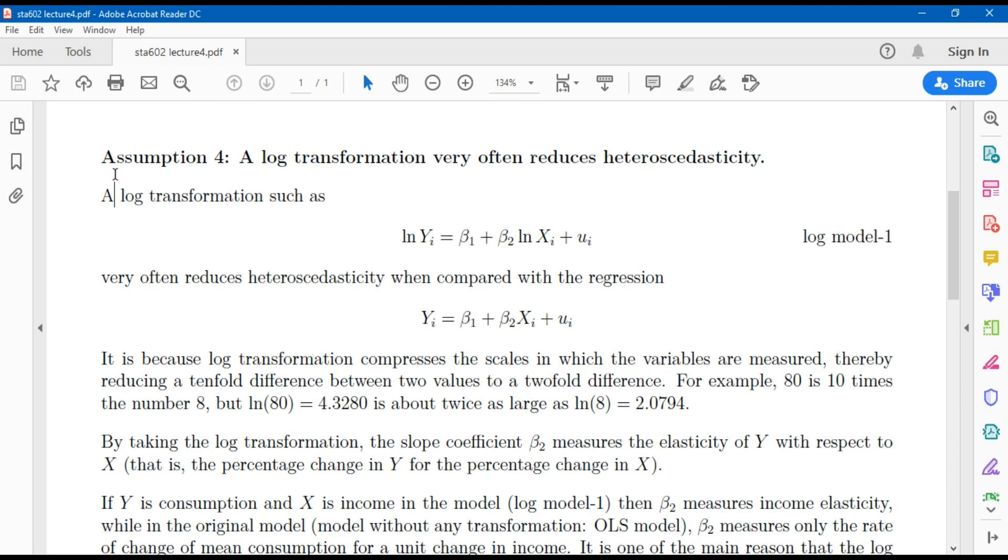The fourth hypothetical assumption for the remedy of heteroscedasticity is use of log transformation. Log transformation often reduces the heteroscedasticity compared to the original model.